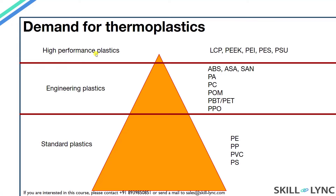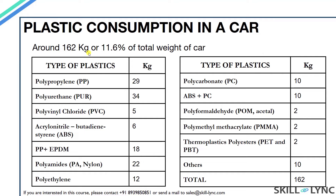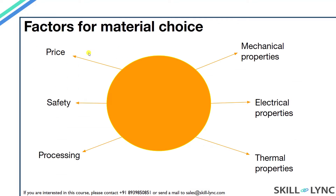High performance plastics are used in applications requiring very high temperature stability and high strength. The weight of plastic in a car makes about 10 to 15 percent of its total weight, and this table shows the weight distribution of various types of plastics used in car manufacturing. Since there are so many plastics available with different properties, selection of the right plastic should be based on mechanical, electrical, and thermal properties, ease of processing, material safety, and cost.